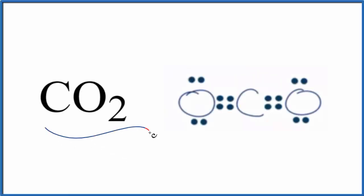Let's look at the bond angles for CO2. This is carbon dioxide. So we start out with the Lewis structure. This is the Lewis structure for CO2.